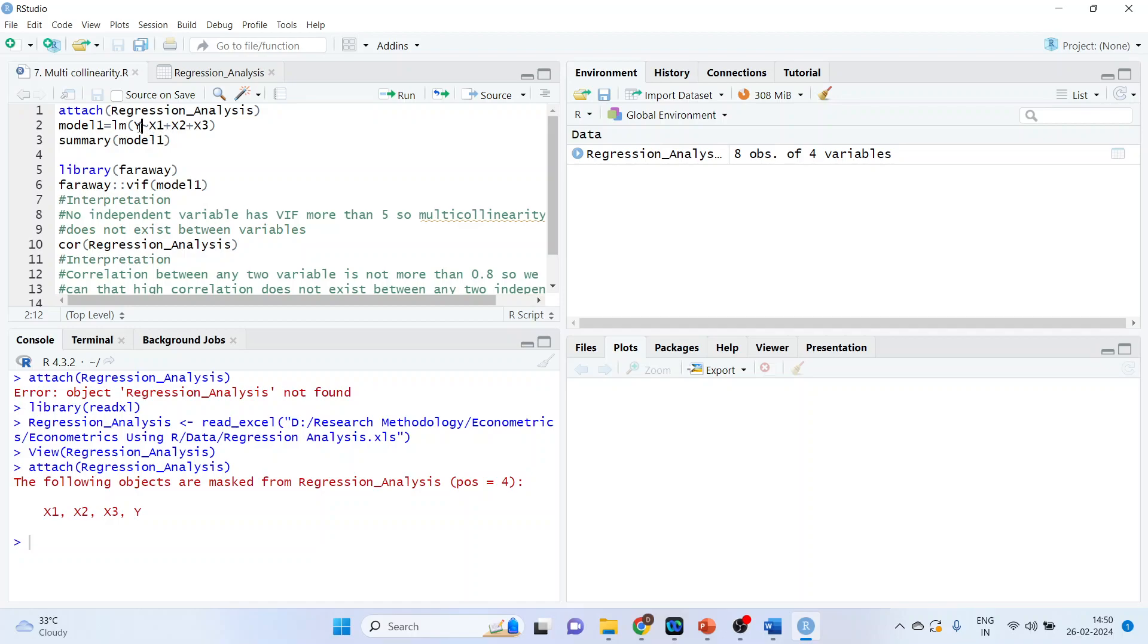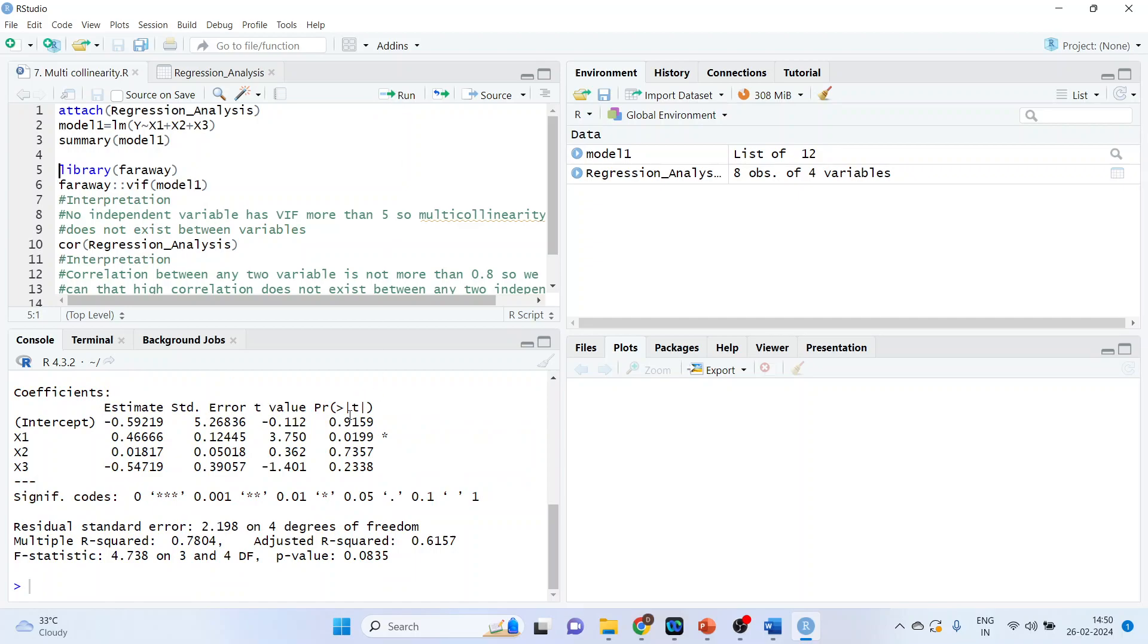We are specifying where is a dependent variable and the independent variables are X1, X2 and X3. Run. Take the summary of model 1. X1 is significant as its p-value is less than 0.05.